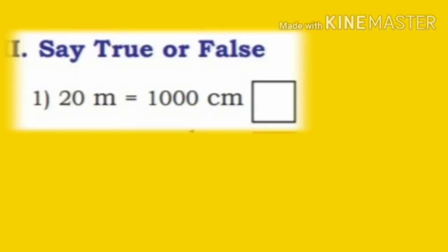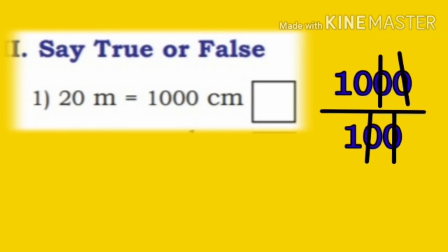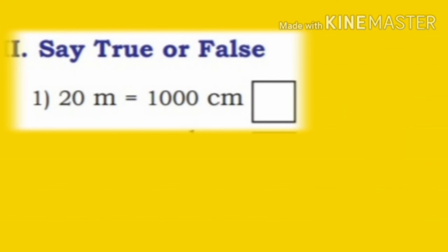Let us solve the problems by writing true or false. First: 20 meter is equal to 1000 centimeter. We divide 1000 centimeter by 100, which equals 10 meter. 20 meter is not equal to 10 meter. So, it is false.